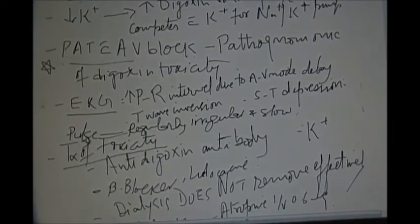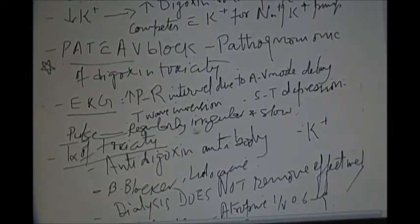The pulse is regularly irregular and slow. The treatment of digitalis toxicity: of course, after stopping the drug, use anti-digoxin antibodies.